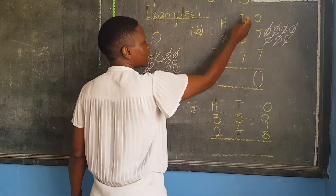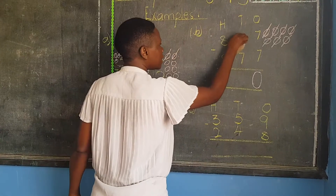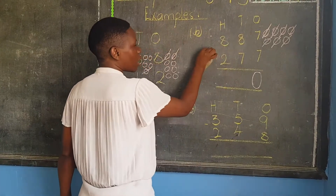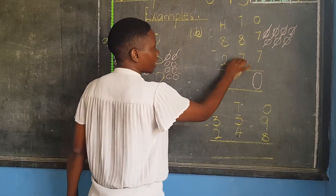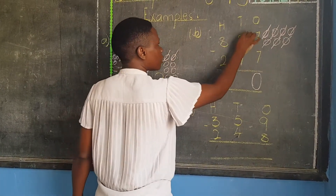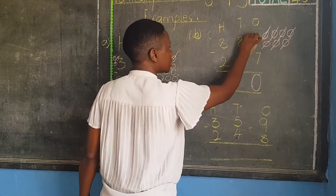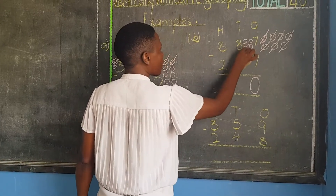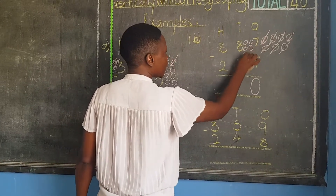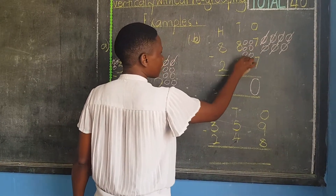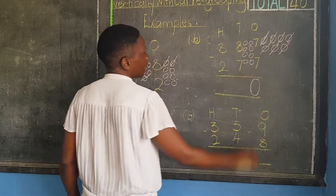Then I come to tens. I say eight, take away seven. Here I am supposed to draw eight balls — one through eight.